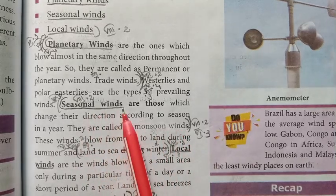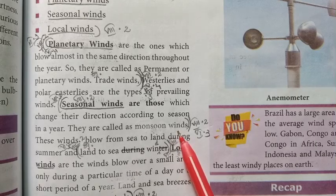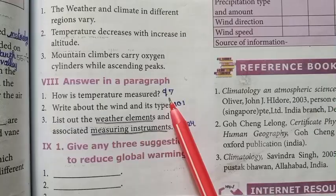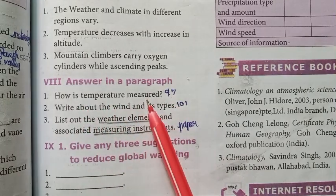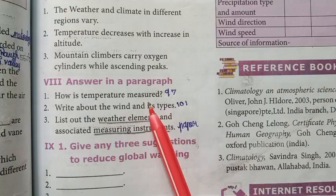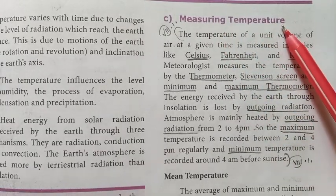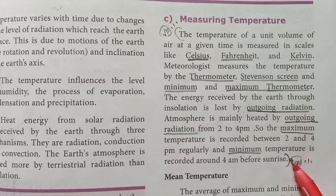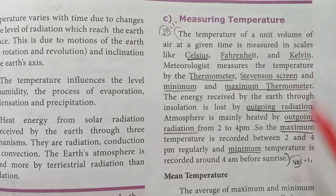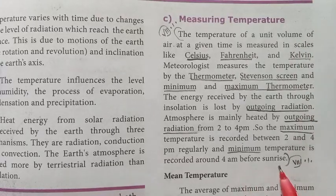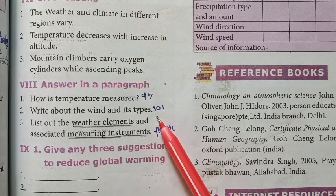Answer in a paragraph. First question: How is temperature measured? Answer from page number 97. The temperature of a unit volume is measured using a thermometer, with readings typically taken before sunrise.